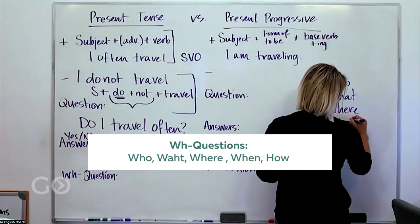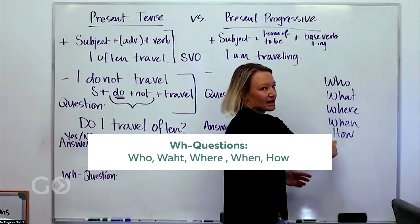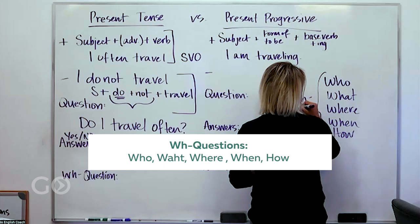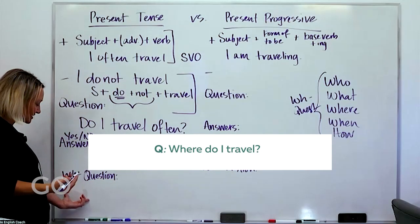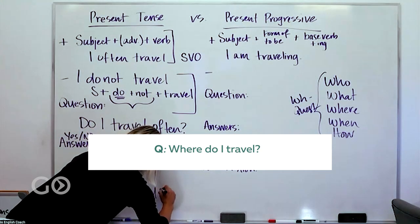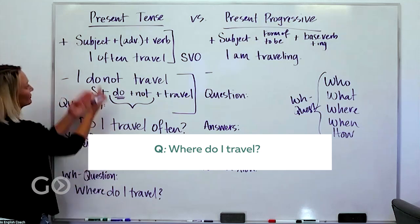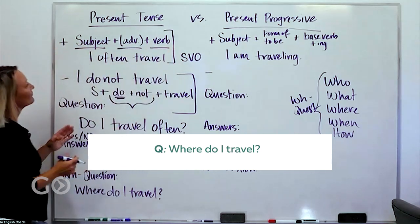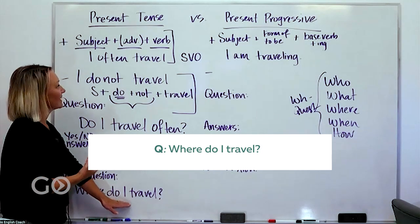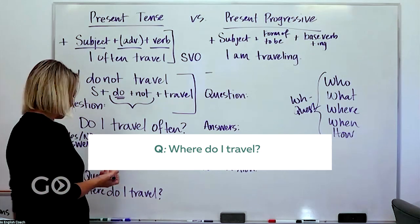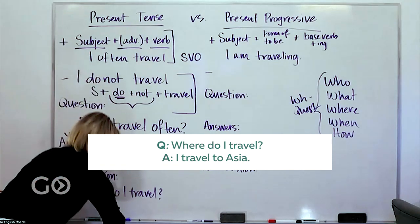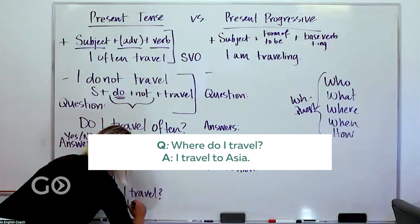So the WH questions are, we usually say this: who, what, where, when, and how. This is not obviously WH but we include that in our, these are called the WH questions. An example for a WH question here would be where do I travel? So we've got the WH, if we're looking at this formula, where, the do auxiliary, the subject, and then your base verb.